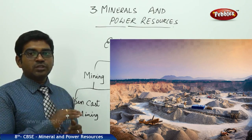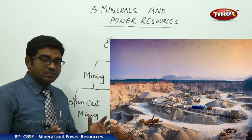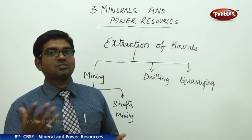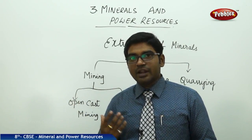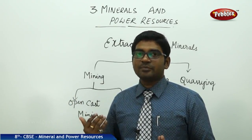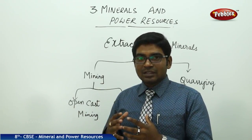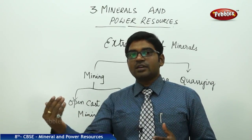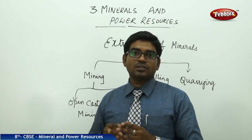In mining, there are two types: open cast mining and shaft mining. In open cast mining — for example with iron ore — they remove entire layers of earth using cranes, going deeper and deeper by making a wide, open pit structure. They remove one layer after another across a wide area to reach the iron ore, which is why it is called open cast mining.